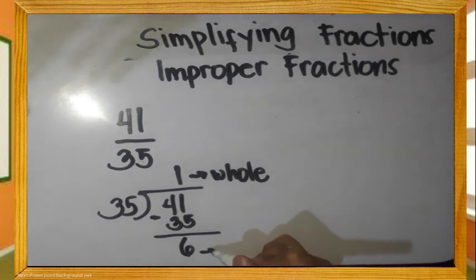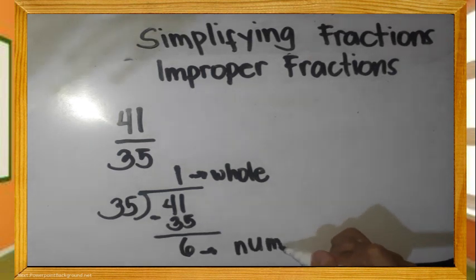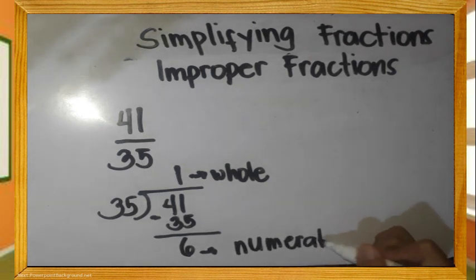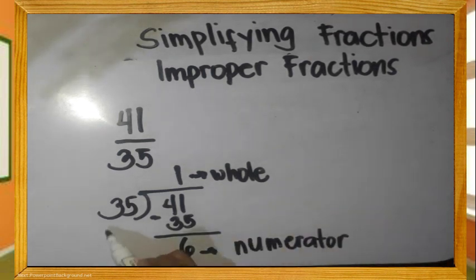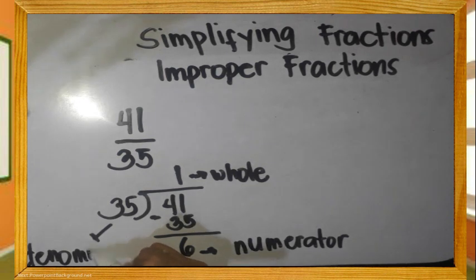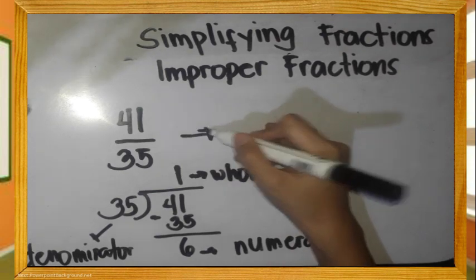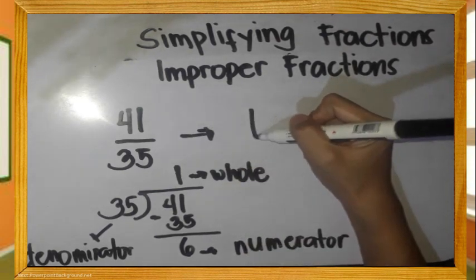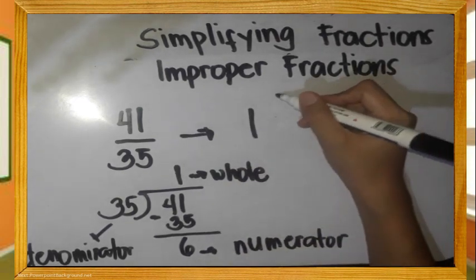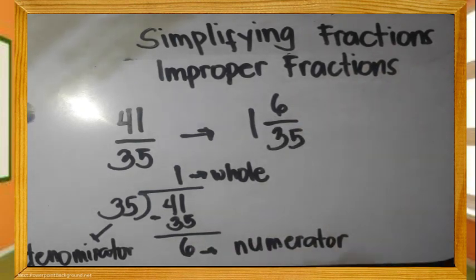Ang quotient natin ang magiging whole number. Ang remainder ang magiging numerator. At ang ating divisor ang magiging denominator. Kaya kung isusulat natin yan: 1 whole, we have 6 as numerator, then 35 ang ating denominator.